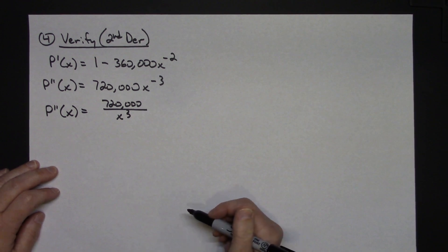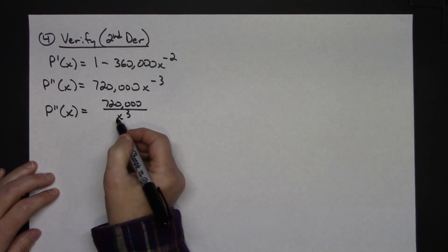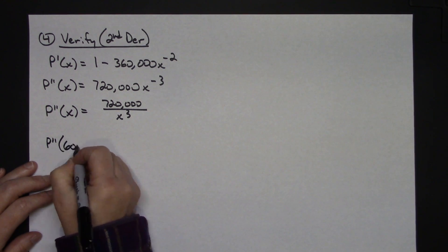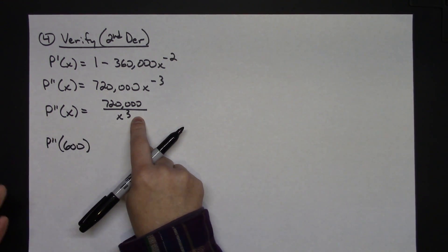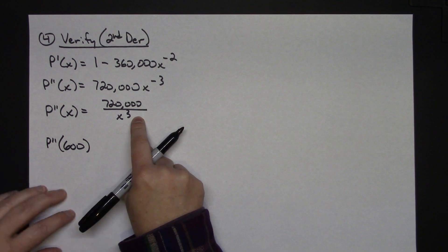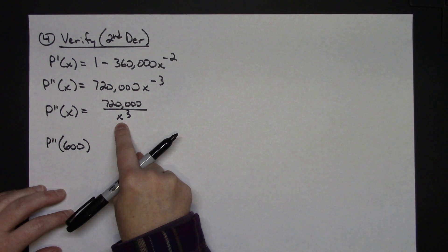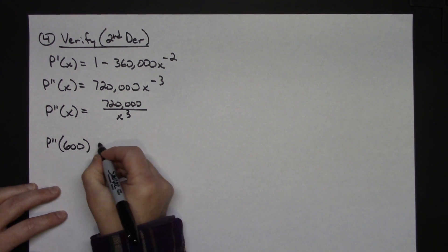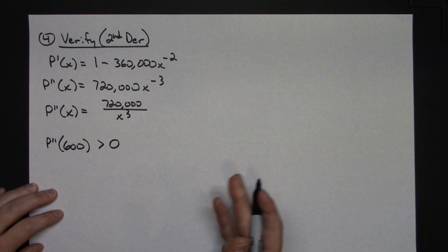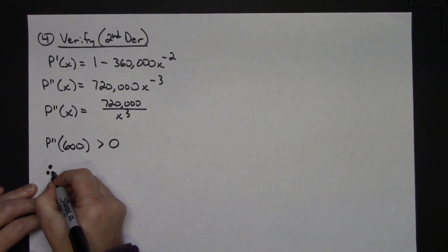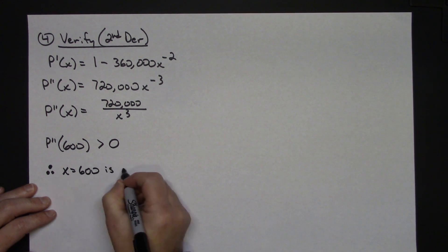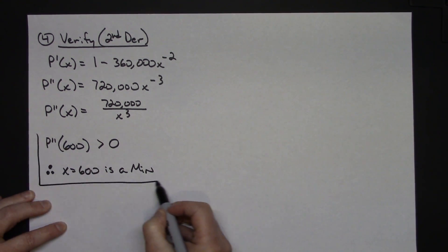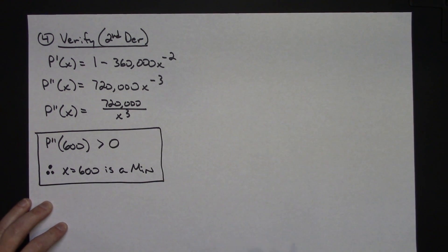To do the second derivative test, I plug in X equals 600. I only need to know whether it's positive or negative. I have a positive number on top, and 600 cubed is positive, so the second derivative at 600 is greater than zero. Therefore, X equals 600 is a minimum — which is exactly what I was wanting to prove for the answer to the story problem.